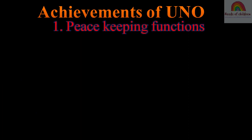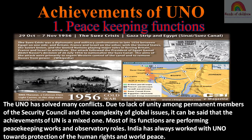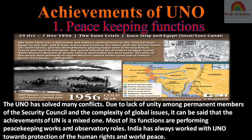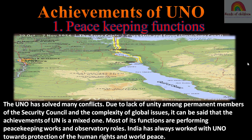So, what are the achievements of UNO? Among that, dear students, peacekeeping functions. The UNO has solved many conflicts. Due to lack of unity among the permanent members of the Security Council and the complexity of global issues, it can be said that the achievements of UNO is a mixed one. Most of its functions are performing peacekeeping works and observatory roles. India has always worked with UNO towards the protection of human rights and world peace.